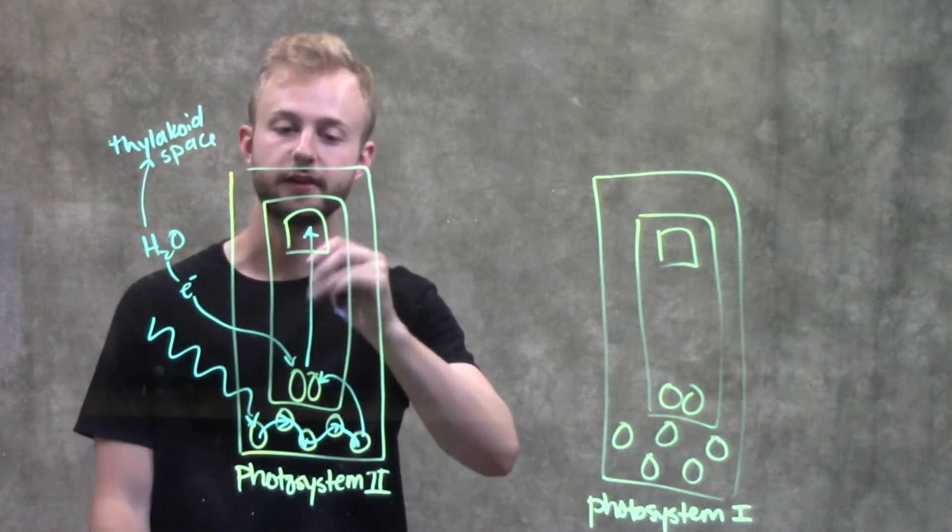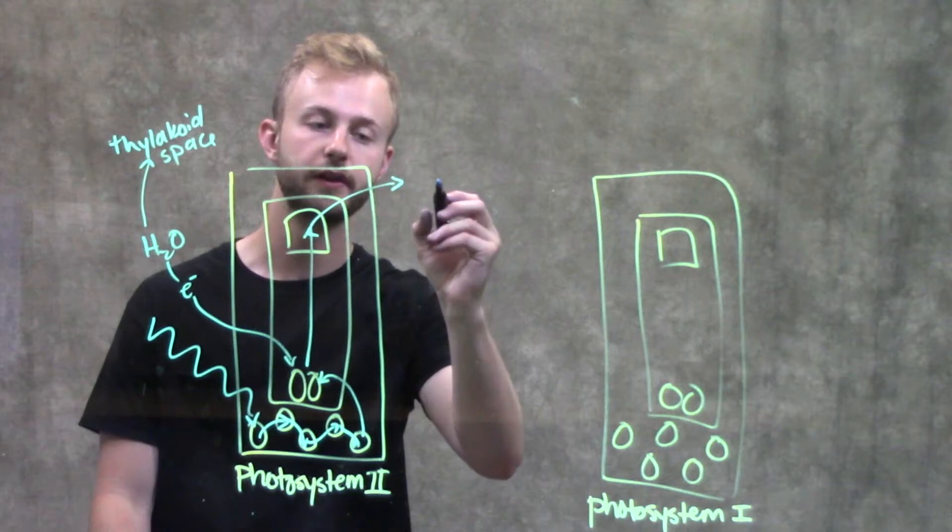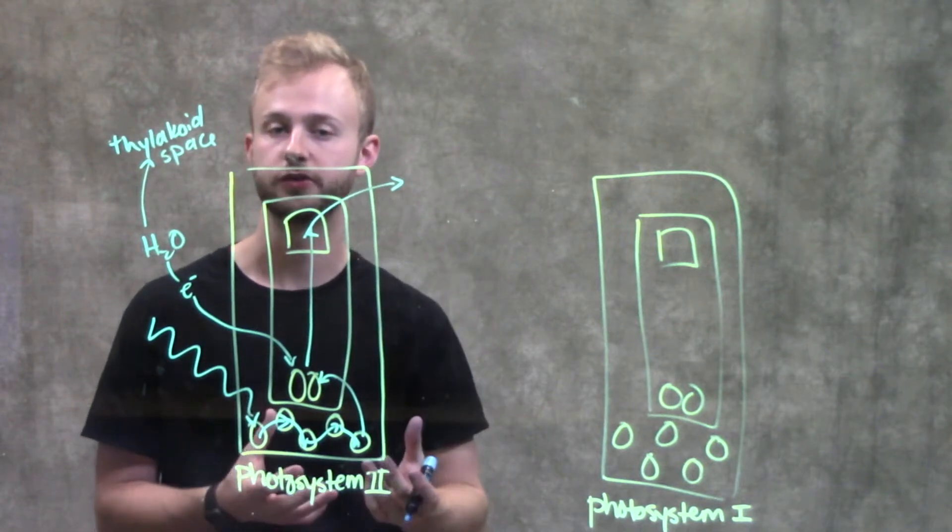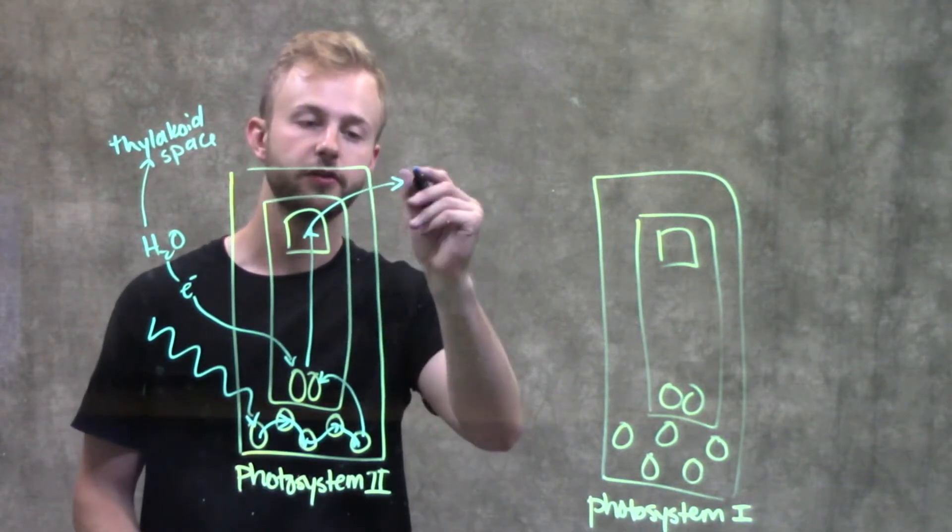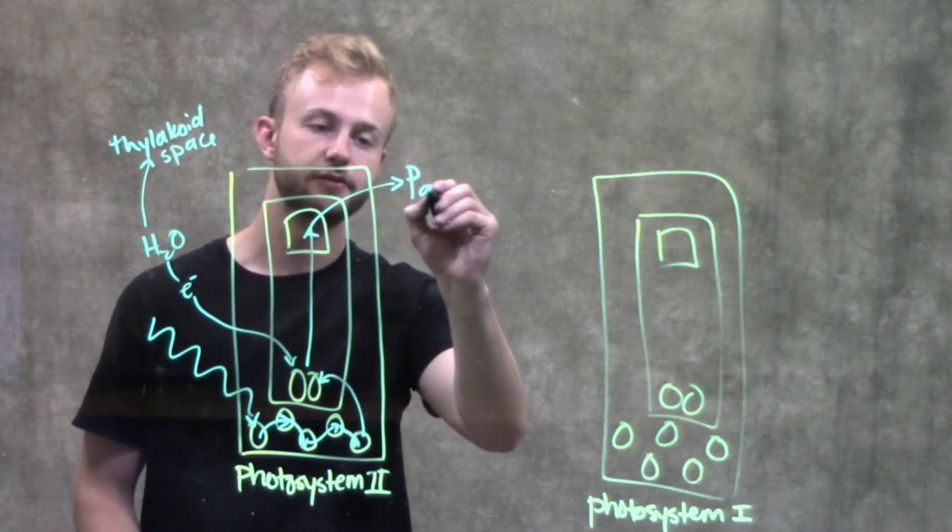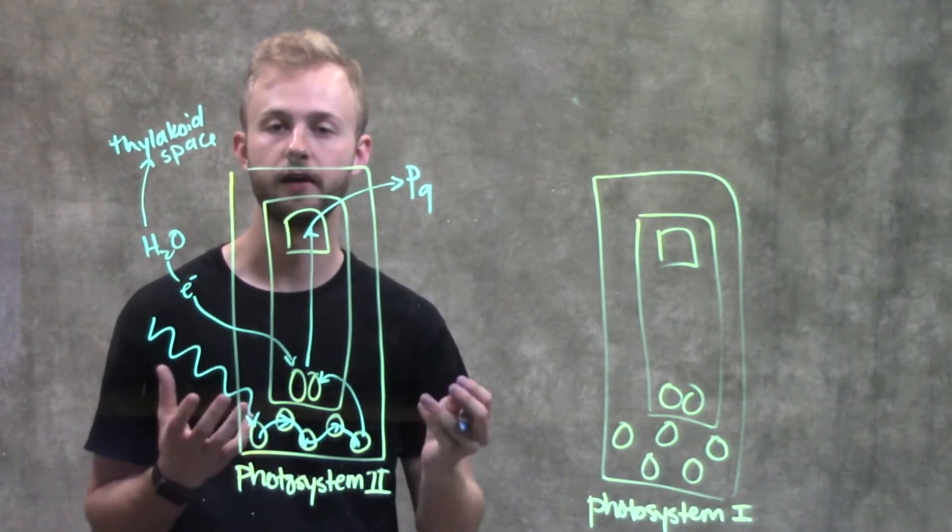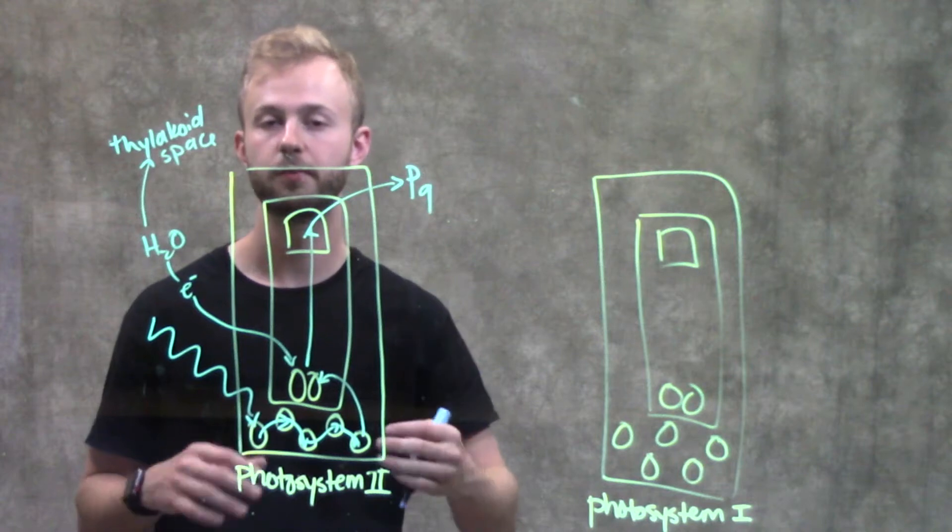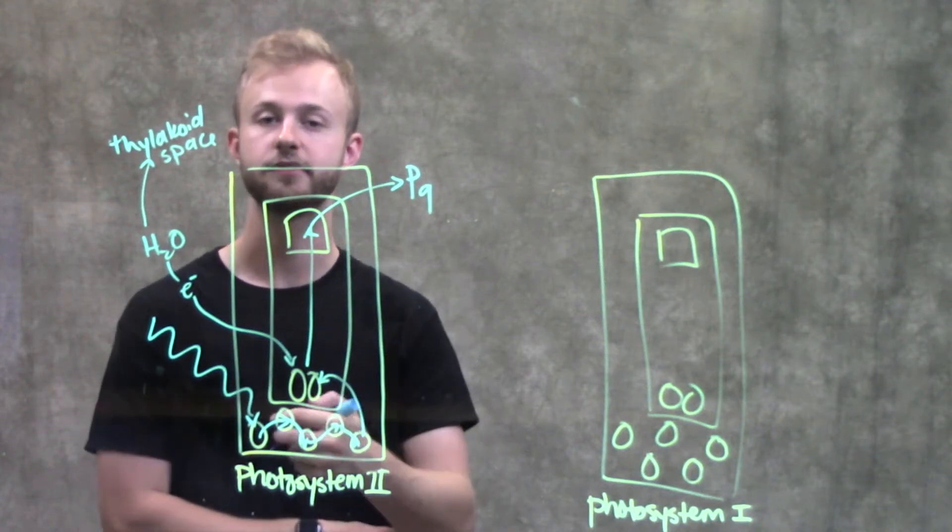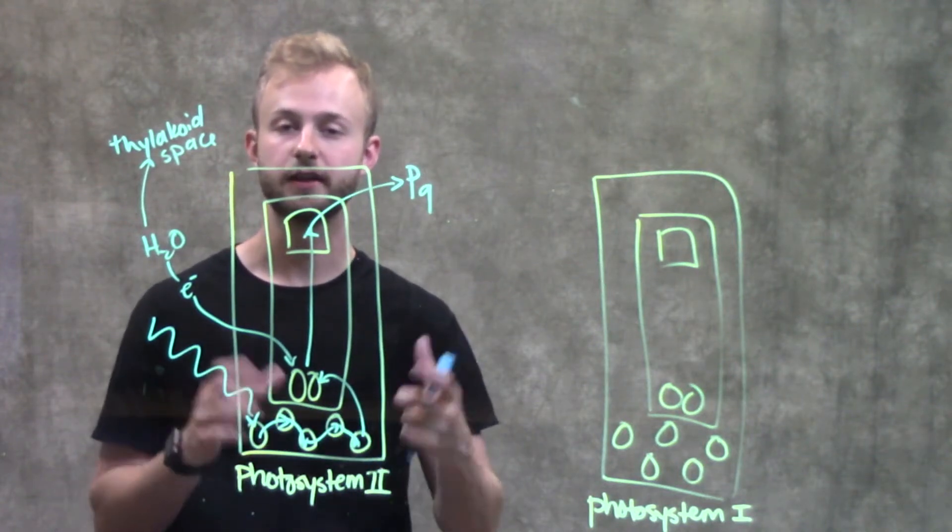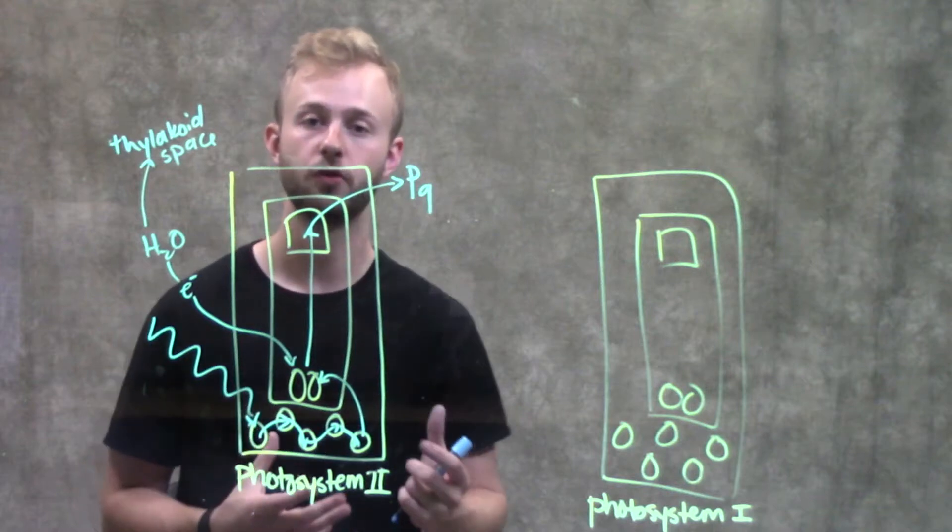From the primary electron acceptor, the electrons move into a small electron transport chain. The first molecule they go to is plastoquinone. Plastoquinone and other components help pump additional protons into the thylakoid space to make a larger proton gradient.